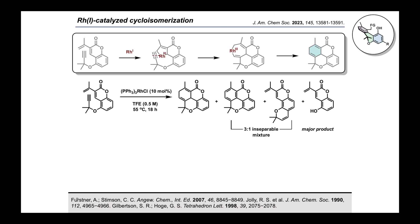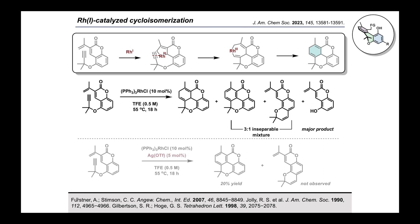We examined Wilkinson's catalyst in trifluoroethanol at 55 degrees. We were delighted to observe the desired 1,4-cyclohexadiene product as well as its oxidation product. We also observed, however, the depropargylated and propargyl Claisen products. But with the addition of silver triflate, we were thrilled to observe exclusively the desired cycloisomerization oxidation product.